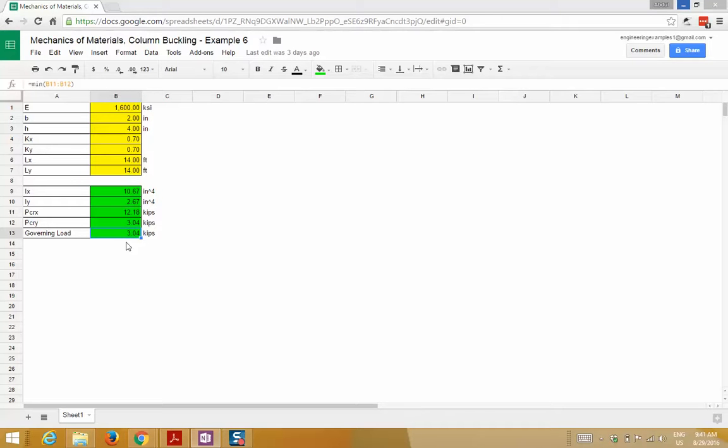In this spreadsheet, I calculated the critical buckling load about the X and Y axis separately. But since we know that the effective length for both axes are equal, we can directly input the least moment of inertia and we'll still get the same answer: 3.04 kips.